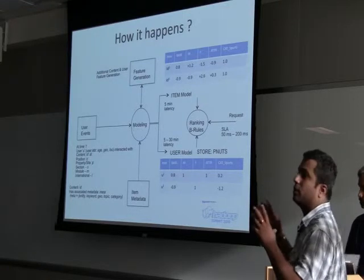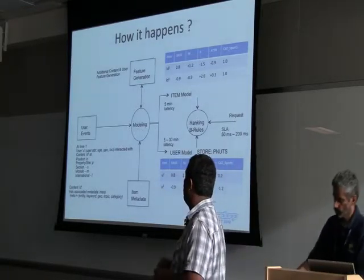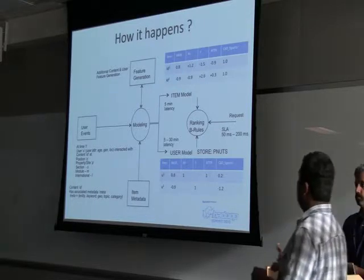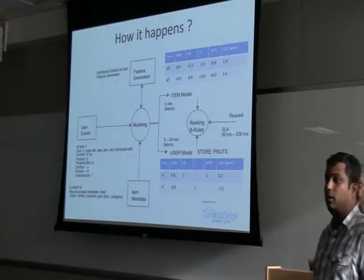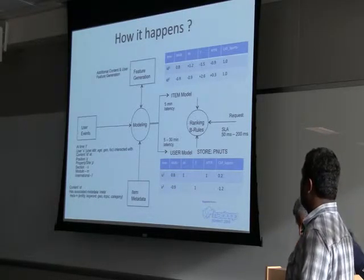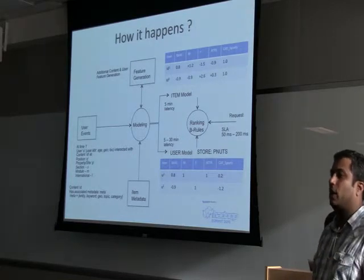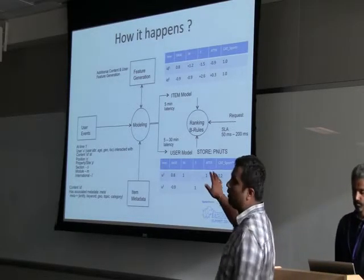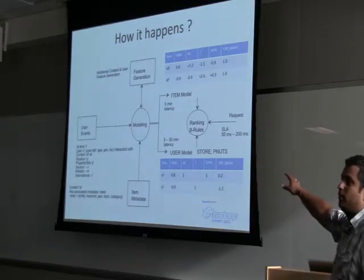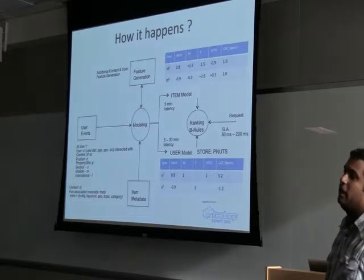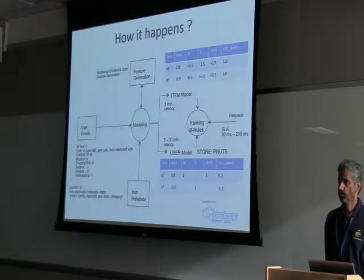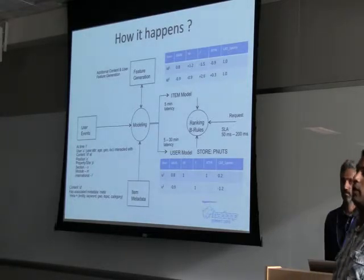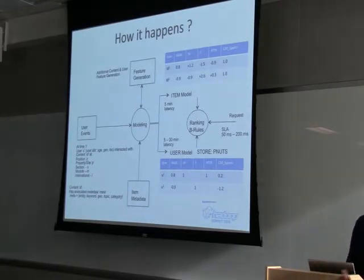Looking at the overall structure of the problem: we are capturing user events flowing in real-time into the system, merging with item metadata that we can acquire in real-time, and connecting it to a feature generation service. Out comes two different kinds of models — one is the item model, which tells how the item is behaving for different segments. When I talk about millions of items, you can imagine millions of rows with hundreds of thousands of features on those items, and you need to update these as fast as you can.